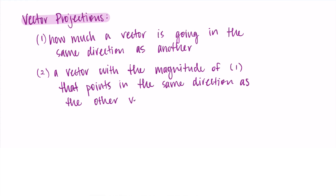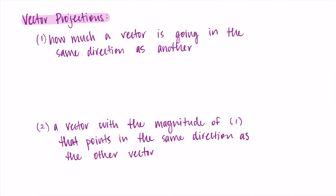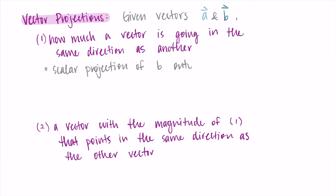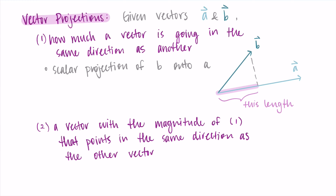That was really general — let's use pictures and variables. Say we're given vectors a and b. For this first case we call this the scalar projection of b onto a. We're looking at an acute angle between b and a, and we drop a vertical line from b onto a. We want to know that length — the side of the triangle — which tells us how much of b is pointing in the direction of a.